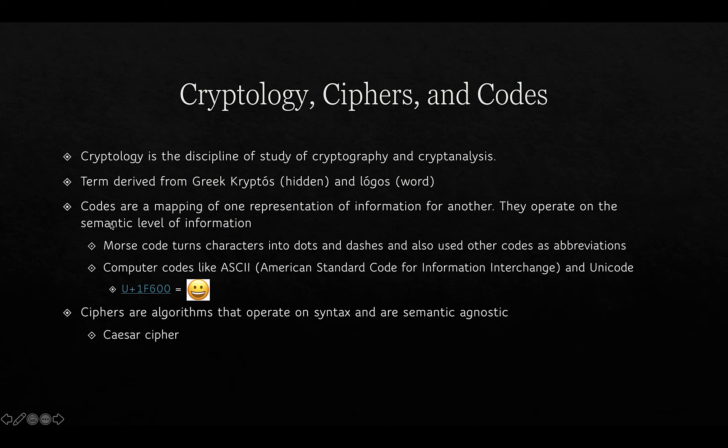Some terminology: cryptology is the discipline studying both cryptography and cryptanalysis together. The term derives from the Greek cryptos, meaning hidden, and logos, meaning word — so the hidden word. Codes are a mapping of one representation of information to another, operating on a semantic level. Morse code, for example, turns characters into dots and dashes, and in wartime, code words stood for operations.